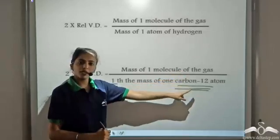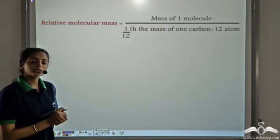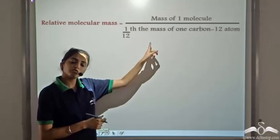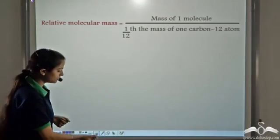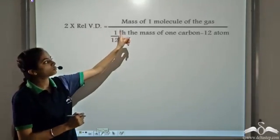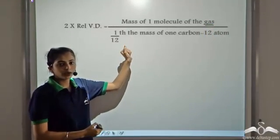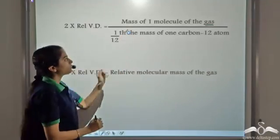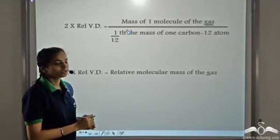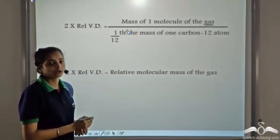Does this remind you of anything? The relative molecular mass of any substance is the mass of one molecule divided by one-twelfth the mass of one atom of carbon-12. That is exactly what we got here: 2 × relative vapour density = mass of one molecule of the gas divided by one-twelfth the mass of one carbon-12 atom, which gives us the relative molecular mass of the gas.